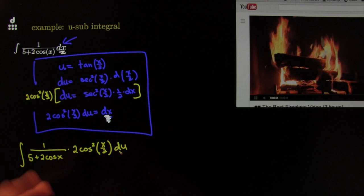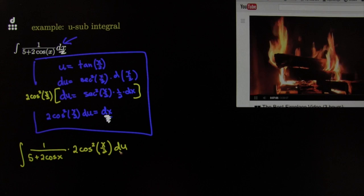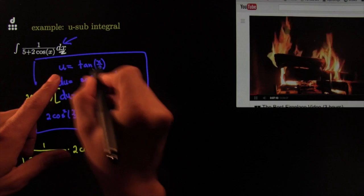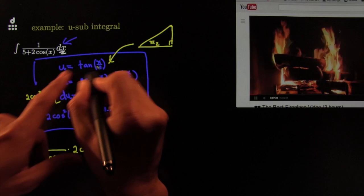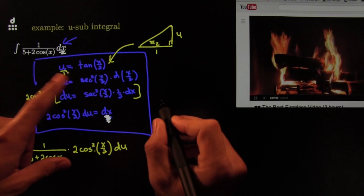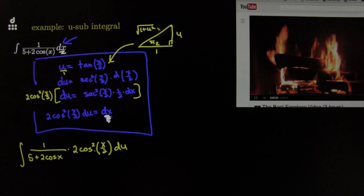Anybody in their right mind would say that doesn't look like I'm going the right way. So you sit back, relax, look at the fire, listen to the music, sip your espresso, and think: I love this problem. Press forward. I've got a tangent in my dictionary — maybe I can use that to change things to cosines. If I draw a right triangle where the angle is x over 2, the tangent ratio is opposite over adjacent — that's u over 1.